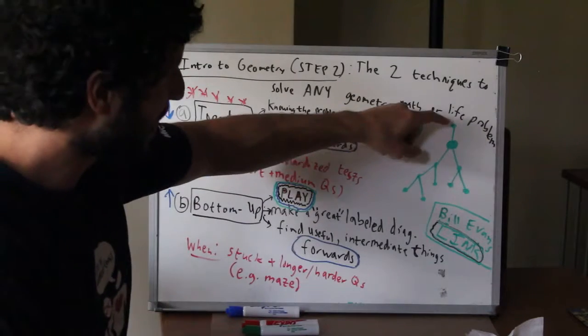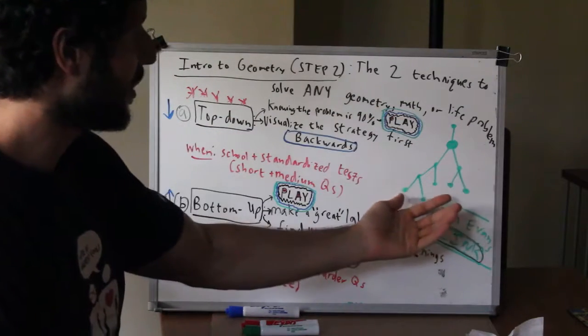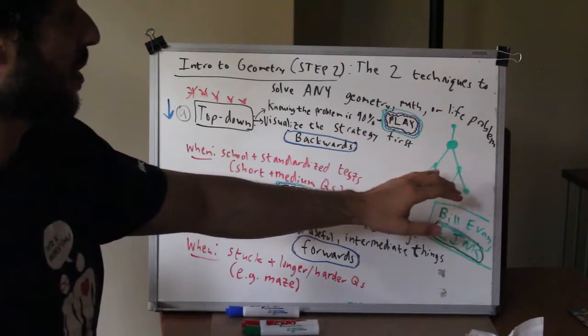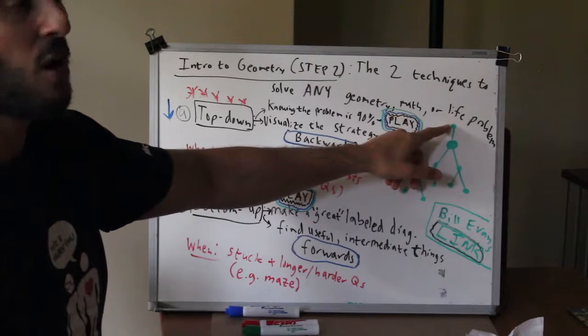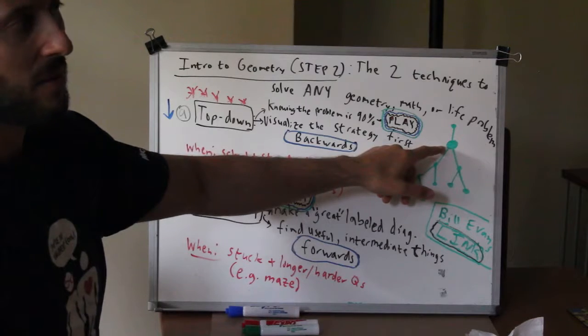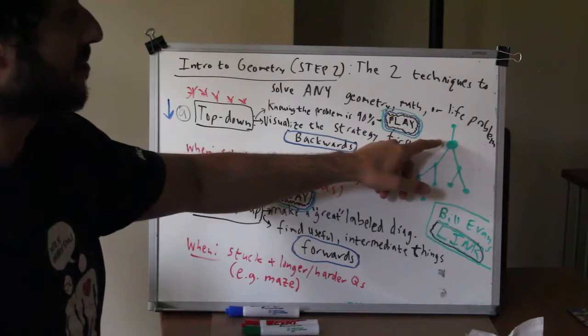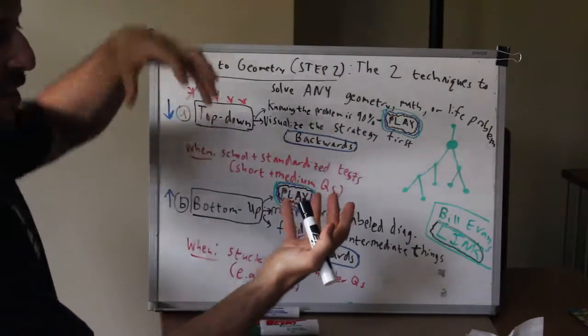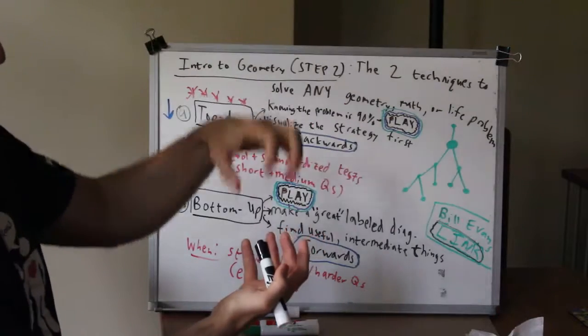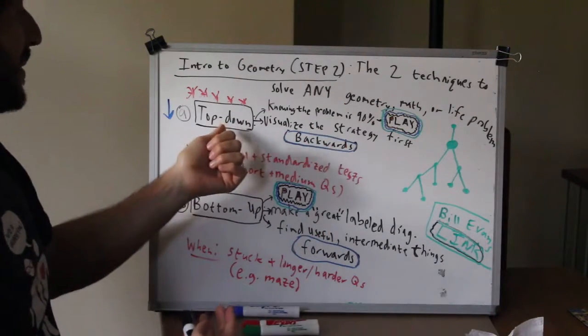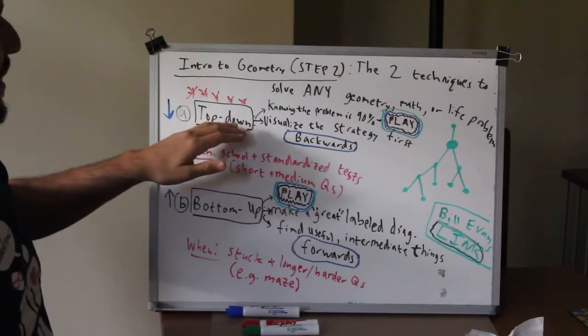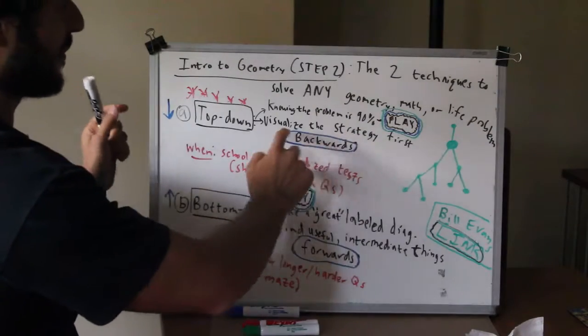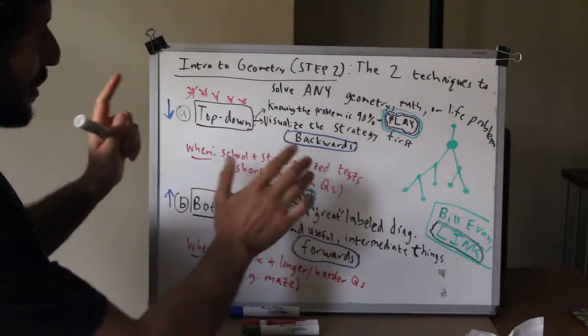The top-down approach basically says let's see where we want to get to. So we want to find the radius and we're starting at the bottom, so we know the area, we have some information. Rather than try to work forwards, we think, well to get the radius what would we need? Oh we might need the area formula. So the idea is basically you have information in the problem but then they ask a question, so we're going to start with the question and work our way backwards. You can think of this as backwards instead of top-down. I prefer thinking of top-down because I think the key word here is strategy.